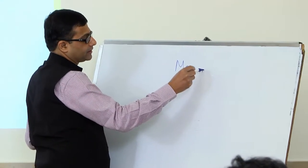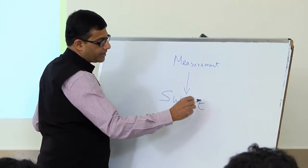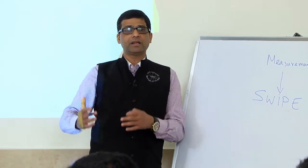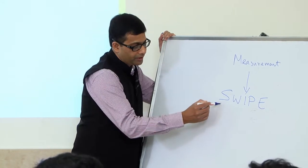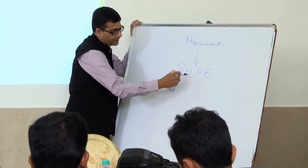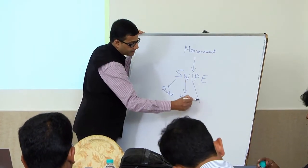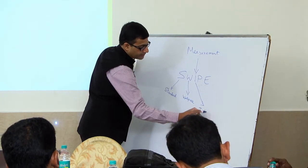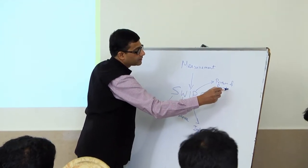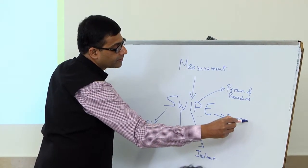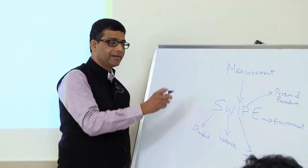When I say measurement, there is a small system inside called SWIPE. Just like in a process you had man, machine, material, method and everything, in measurement also we have SWIPE. S stands for standard, W stands for workpiece — the component, the part that you are planning to check, the sample. I stands for instrument, P stands for person and procedure, and E stands for environment — mother nature. Just like in SPC there are 6Ms, even in MSA there are 5 factors inside.